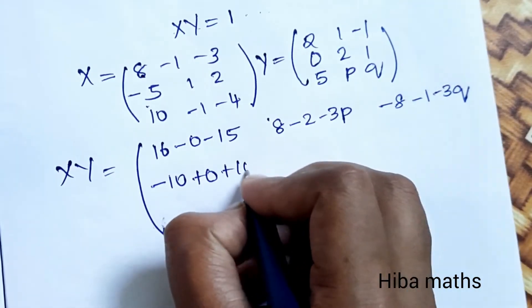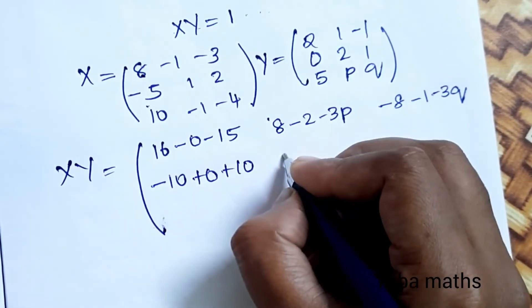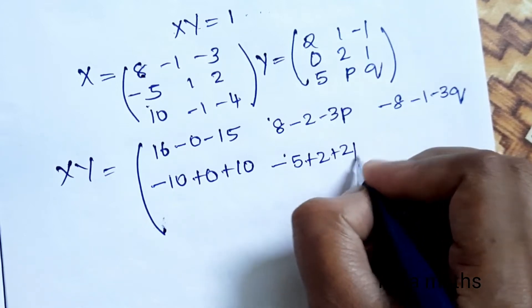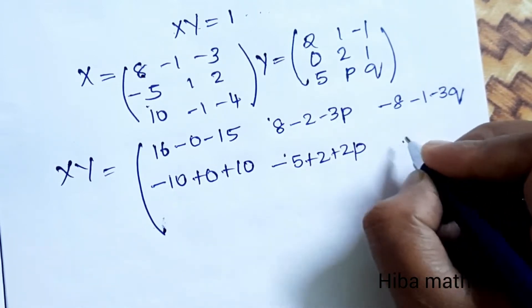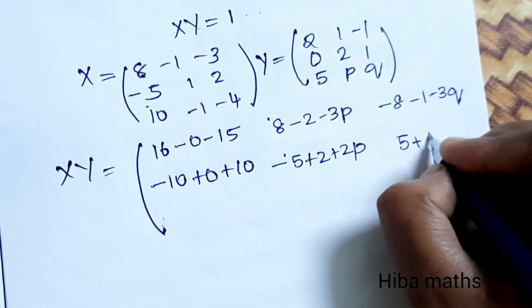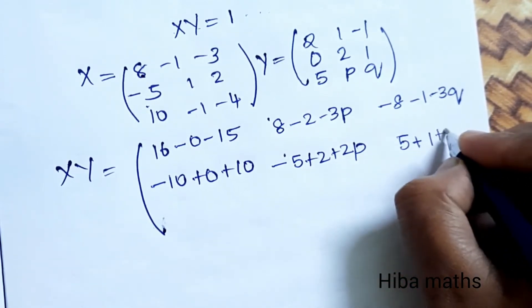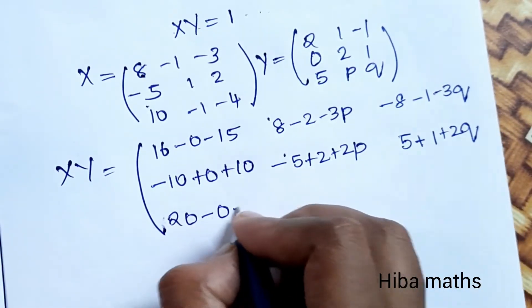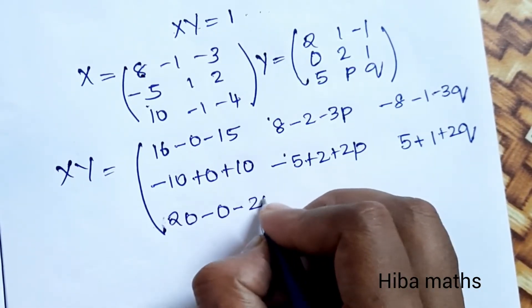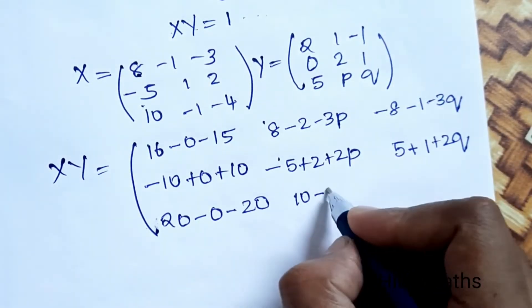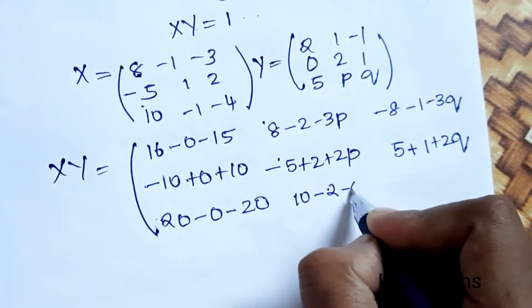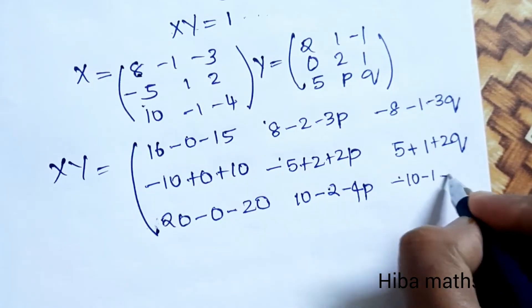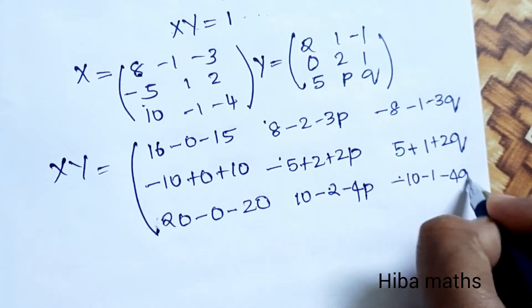Continuing: minus 5 plus 2 plus 2P; 5 plus 1 plus 2Q; 20 minus 0 minus 20; 10 ones are 10, minus 2, minus 4P; minus 10, minus 1, minus 4Q.